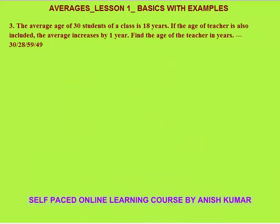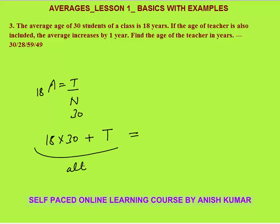Next question: the average age of 30 students of a class is 18 years. If the age of the teacher is also included, the average increases by one year. Find the age of the teacher. Initially there are 30 students, average is 18, so total age = 18 × 30. If age of teacher is T, new total = 18 × 30 + T.